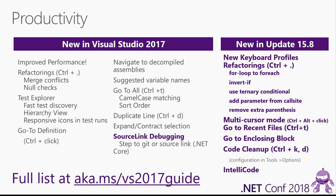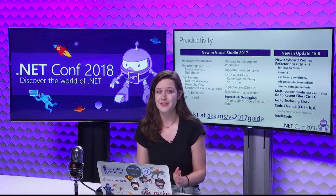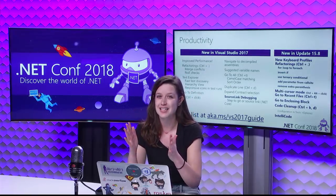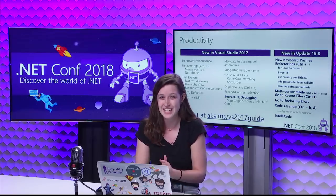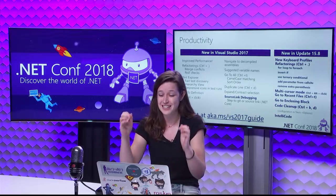Even into minor Visual Studio releases. So here on the right, I've sectioned off everything I'm about to dive into for 15.8. This will include new keyboard profiles for VS Code and ReSharper, refactorings — all of those you access through Control-Dot — and code fixes. We've got for-loop to for-each, invert if, converting to a ternary conditional, a code fix to add a parameter from the call site, as well as removing extra parentheses. We also finally have multi-cursor mode officially in 15.8. You don't need an extra extension, you don't need to turn on a feature flag — it's just there by default. It is Control-Alt-Click.